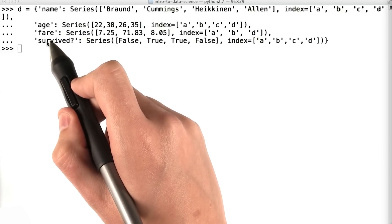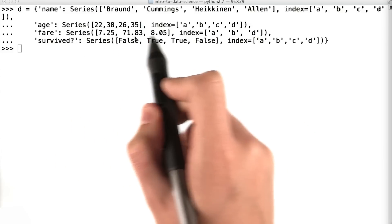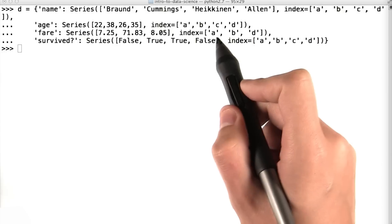Notice that in the case of fare, where there is a not a number value, I only provide three actual values, but then I provide the three corresponding indices.